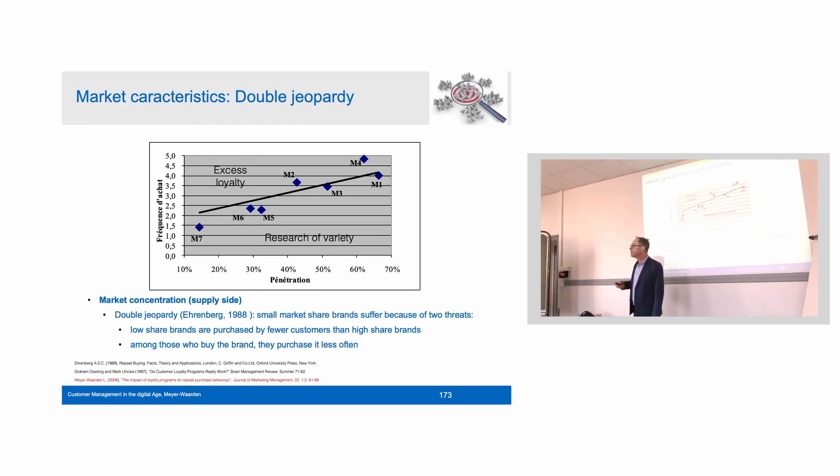He found double jeopardy and replicated the double jeopardy phenomenon with many different surveys in different product categories and time zones. Replication was the basis of his research, and in his replications, he found the double jeopardy phenomenon.